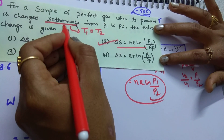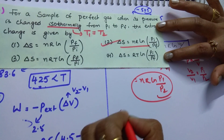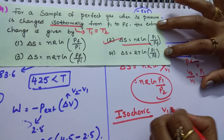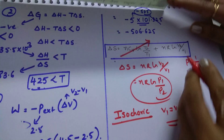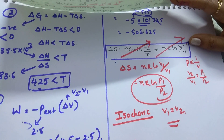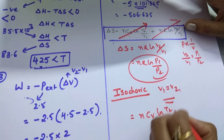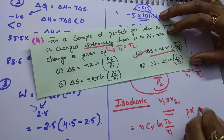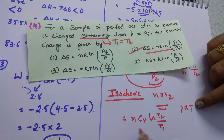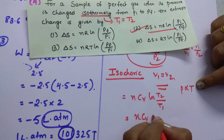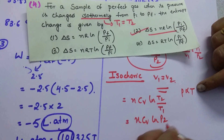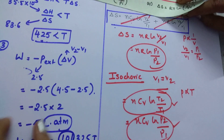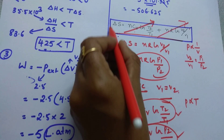If instead of an isothermal process they give an isochoric process, volume is constant, so V2/V1 equals 1 and the second term becomes zero, giving delta S equals N·Cv·ln(T2/T1). Since pressure is directly proportional to temperature at constant volume, T2/T1 equals P2/P1, so delta S equals N·Cv·ln(P2/P1) is also a correct answer.